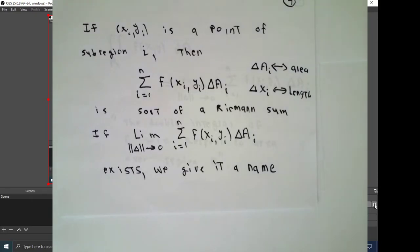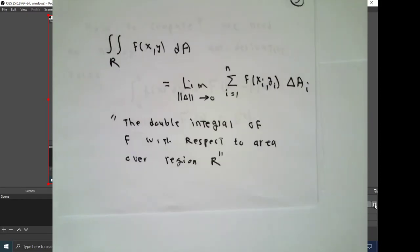This is a Riemann sum in a certain sense. If the limit, as the norm of the partition tends to zero, of these Riemann sums exist, we give it a very fancy looking name. We call it the double integral over region R of f of x and y, integrated with respect to area in the xy-plane. This is just a fancy name for this limit.